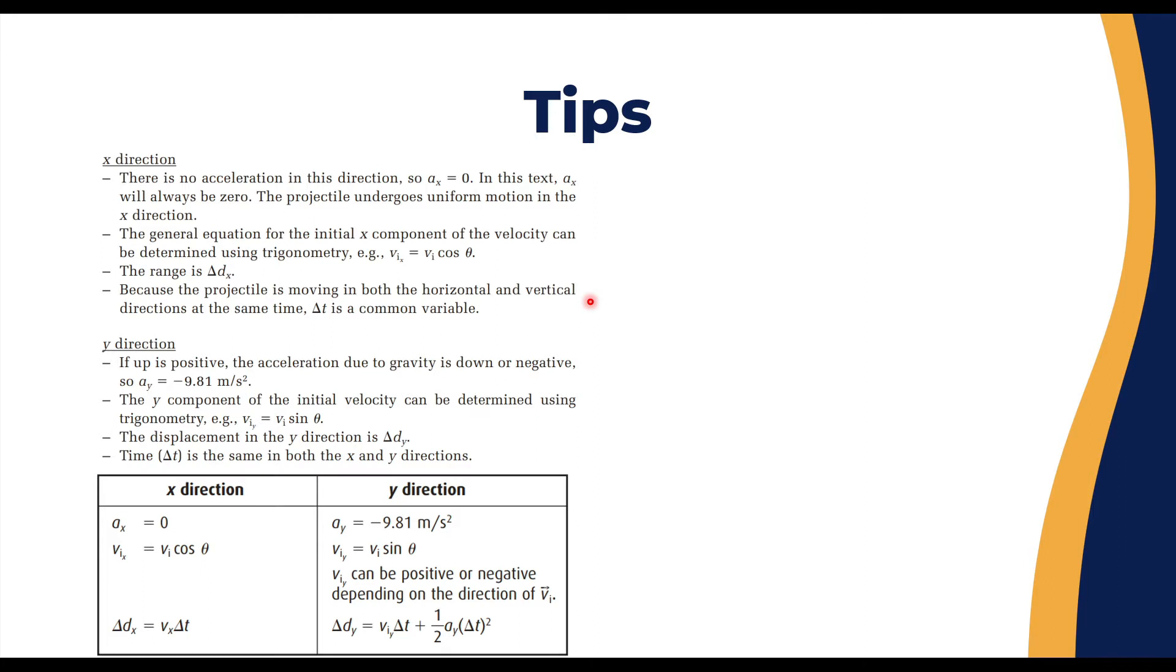The projectile is moving in both horizontal and vertical directions at the same time, so Δt is a common variable. When you see Δt from the moment it left to the moment it hit the floor, it represents Δt for both the x and y axes. For the y-direction, if it's up it's positive, and there's acceleration due to gravity down which is negative. So a_y, the acceleration due to gravity in projectiles, is -9.81 m/s².